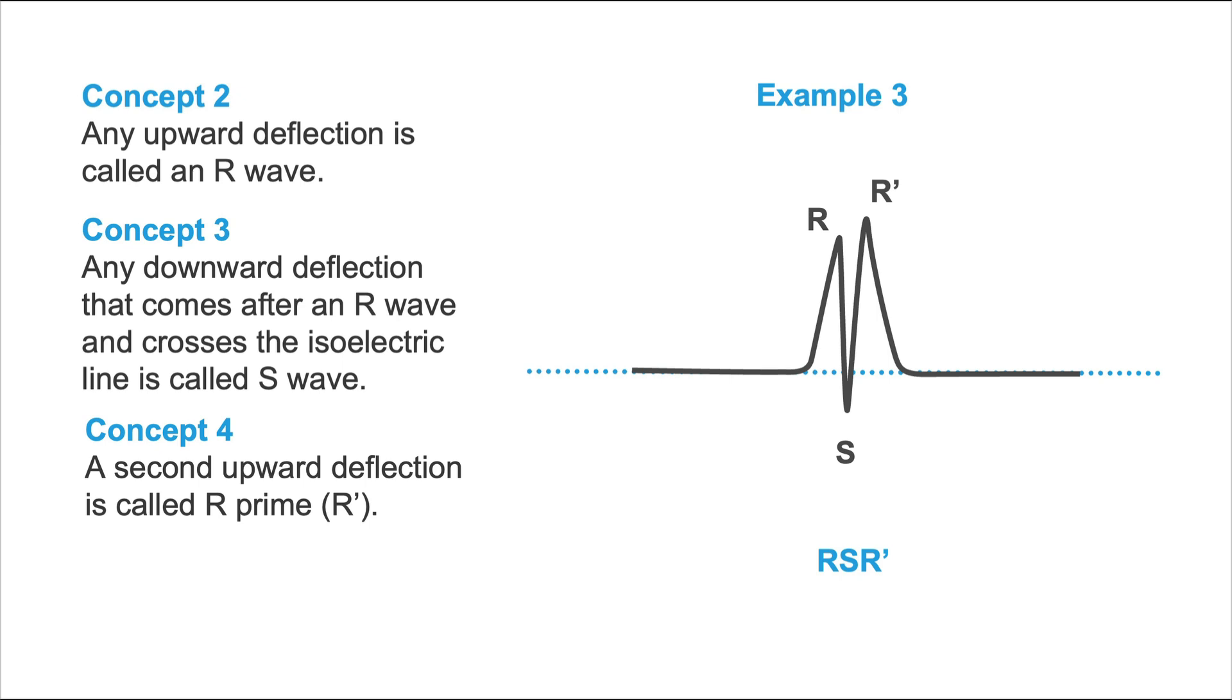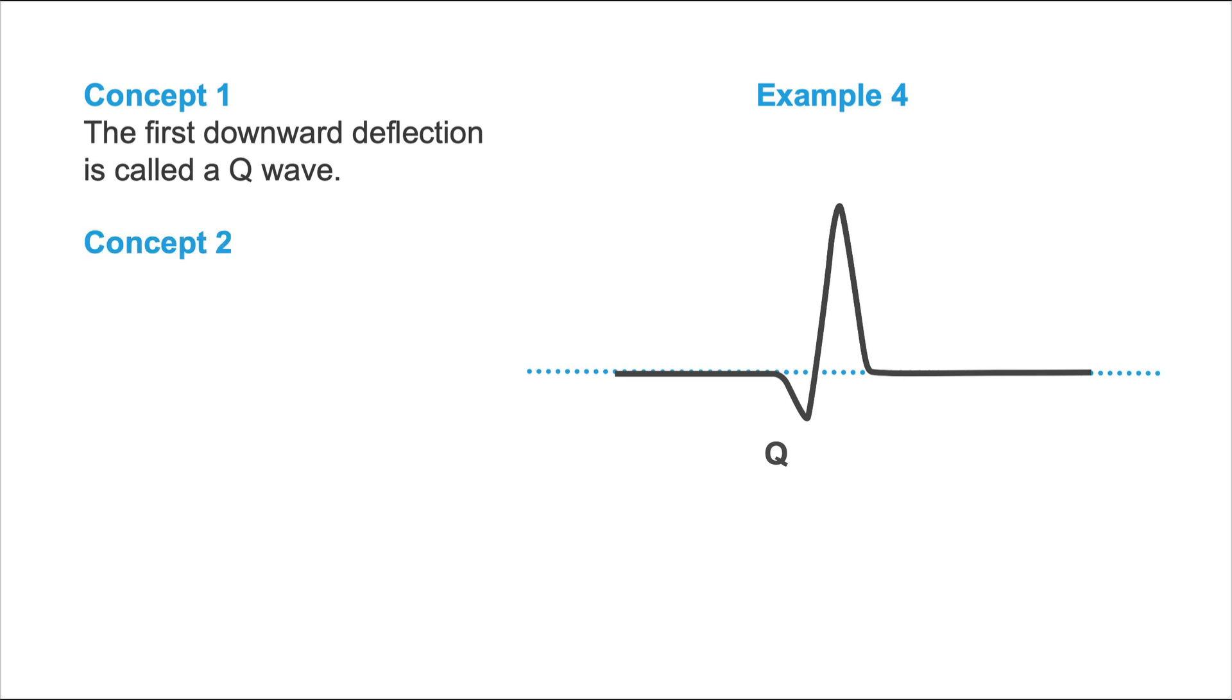Okay, so let's try out another one. Again, pause the video and try for yourself. Then come back and see how you performed. Okay, so let's see the solution. According to concept number one, the first downward deflection is called a Q-wave. According to concept number two, any upward deflection is called an R-wave. So we have a QR-pattern here.